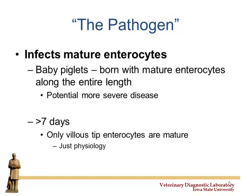Baby piglets have more mature enterocytes. By day seven, it takes about seven days for that enterocyte at the bottom of the crypt to get to the top of that villus — that's the normal progression. So basically seven days post-birth, the virulence of rotavirus is pretty low because those cells have reached immaturity at the top.